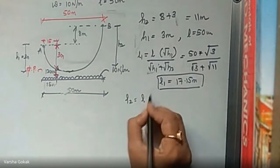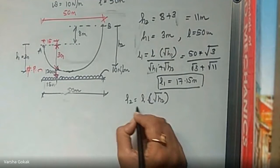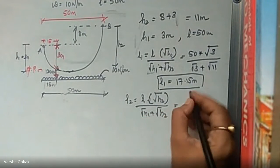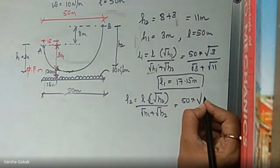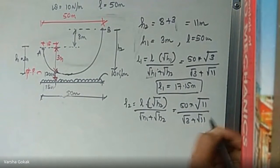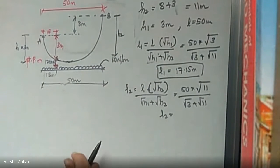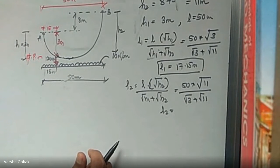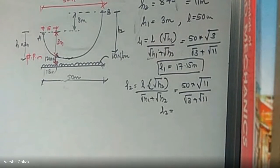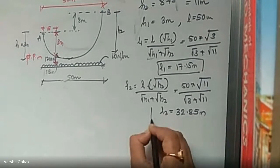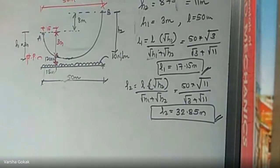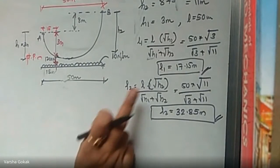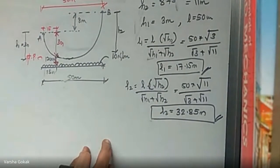Similarly, L2 equals L times root H2 divided by root H1 plus root H2, that is 50 times root 11 divided by root 3 plus root 11, giving L2 equals 32.85 meters. When you add L1 and L2, you get 50, confirming the total span. These equations divide the total length into L1 and L2.